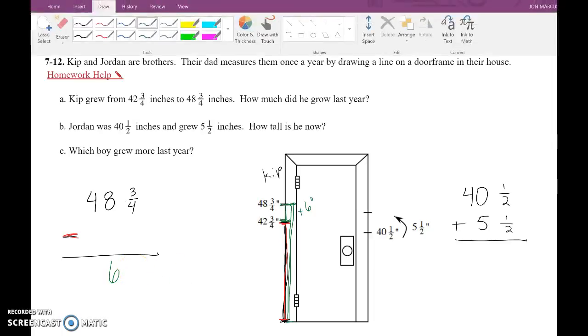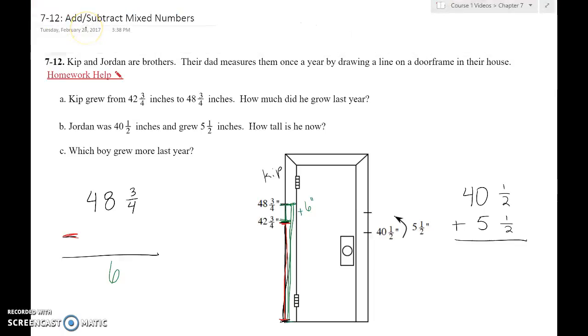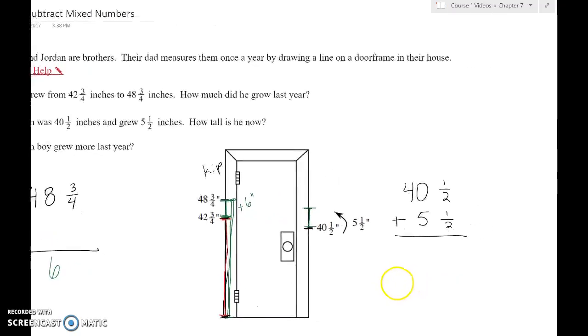Let's talk about Jordan over on this side here. It said that Jordan was 40 and 1/2 inches. So that's where he was. And he grew 5 and 1/2. So he added 5 and 1/2 inches on top of that. So we're just going to go ahead and add those together.